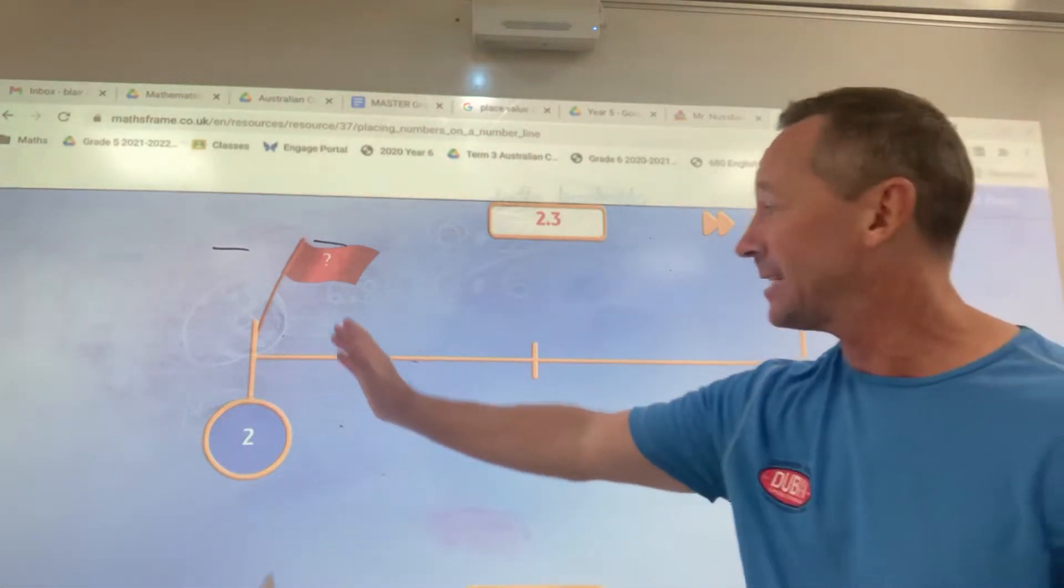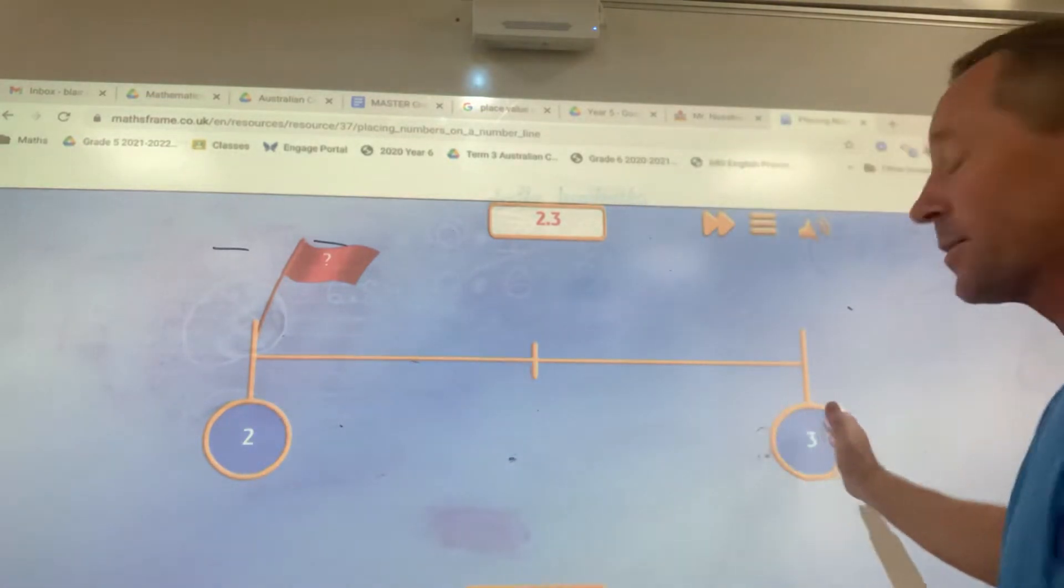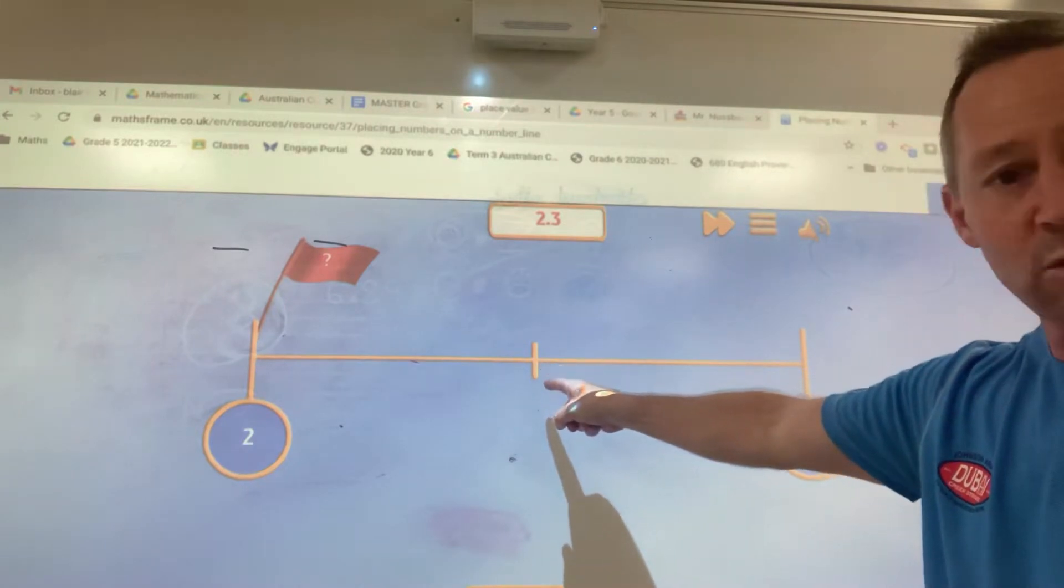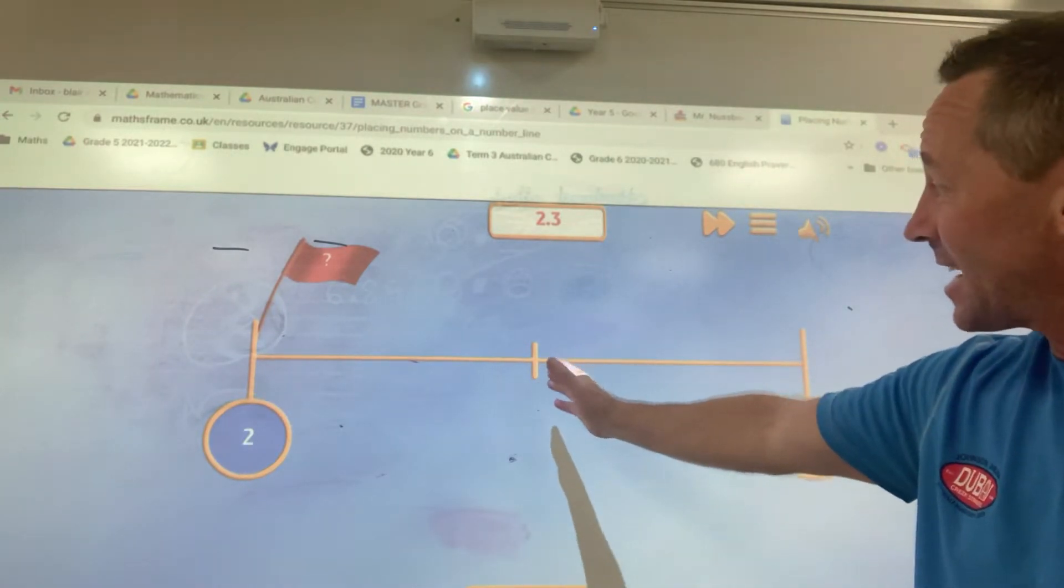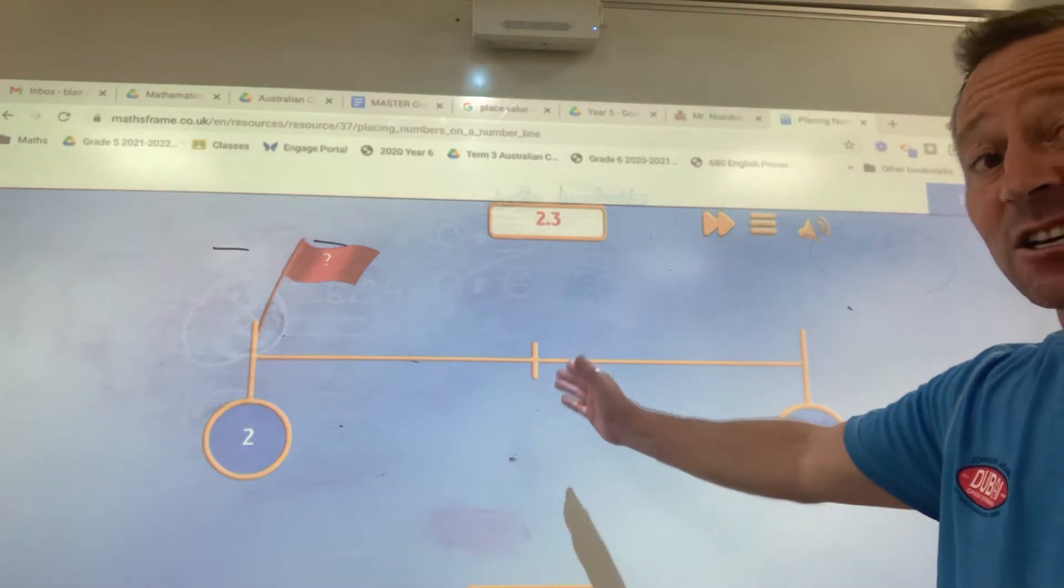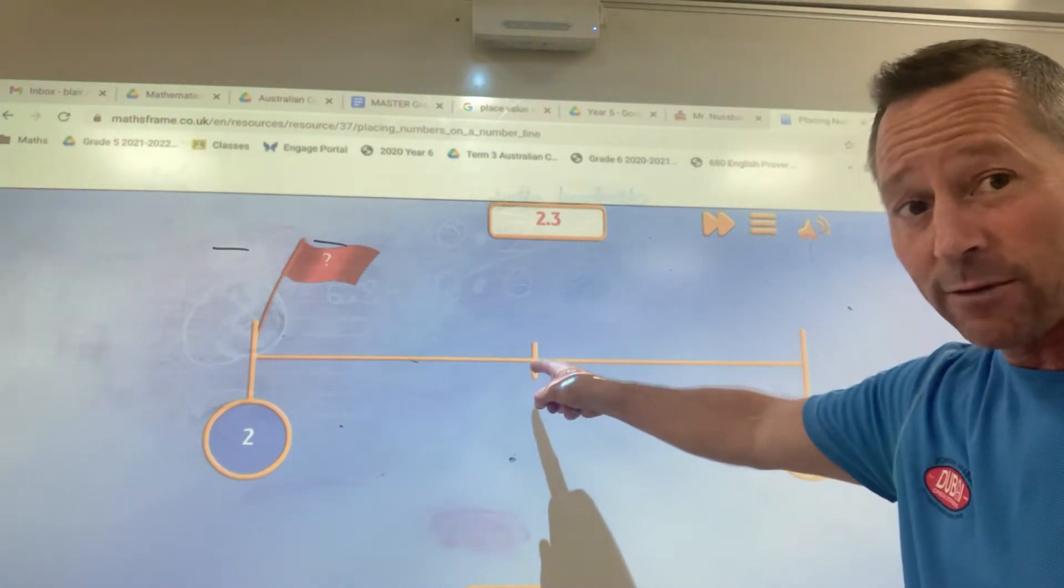So if I'm talking tenths, I need to divide from 2 to 3 into 10 equal bits. I've got one in the middle. What do you think that would be? What's halfway between 2 and 3? 2.5. So that would be 2.5.